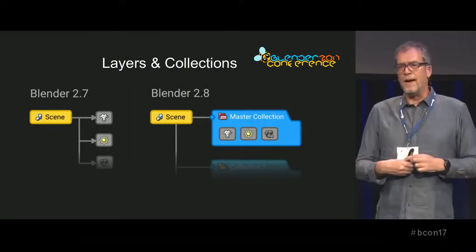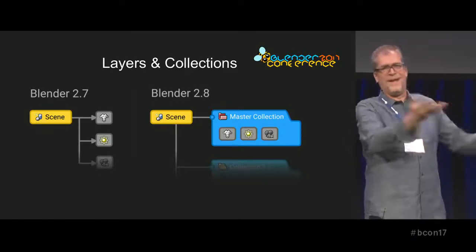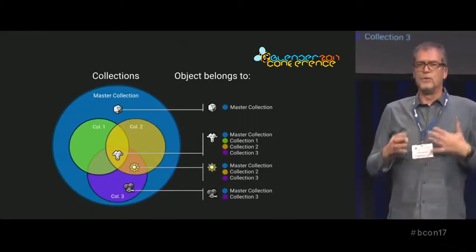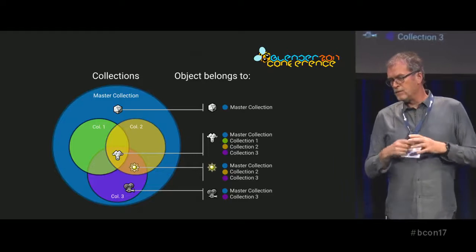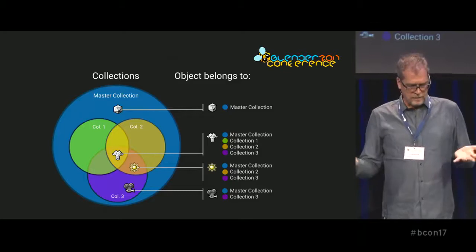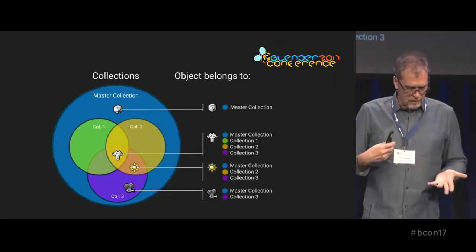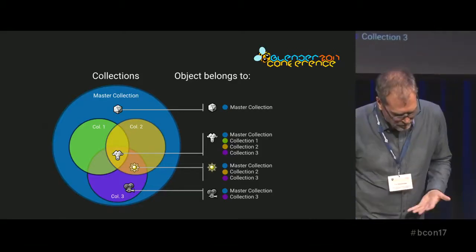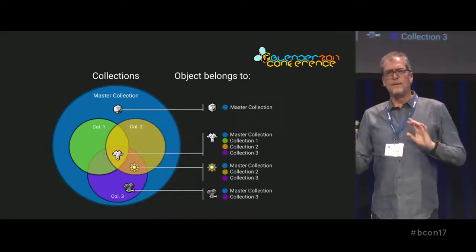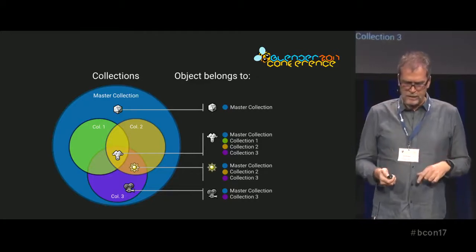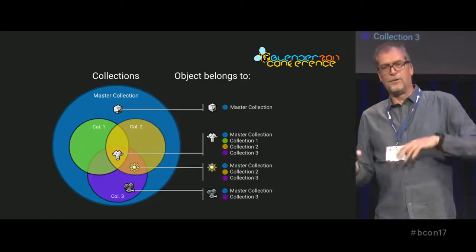If you want to work quickly and you only work on one cube and one plane, you add that in Blender, press render, and get the stuff — it's all in the master collection. But if you want to do more complicated things, you can use collections to their full power. Collections can be like Venn diagrams: some parts of an object can be in everything, the monkey is in every collection, the camera is only in collection three, and the lamp is in collections three and two. You can give them names, and you have unlimited amounts of collections — it's a hierarchical system.